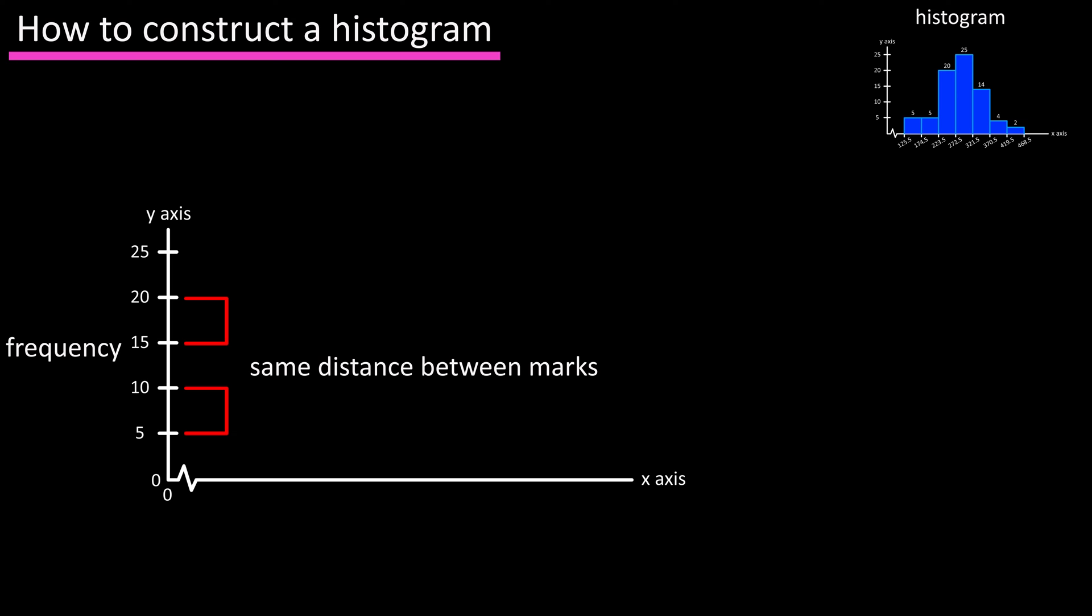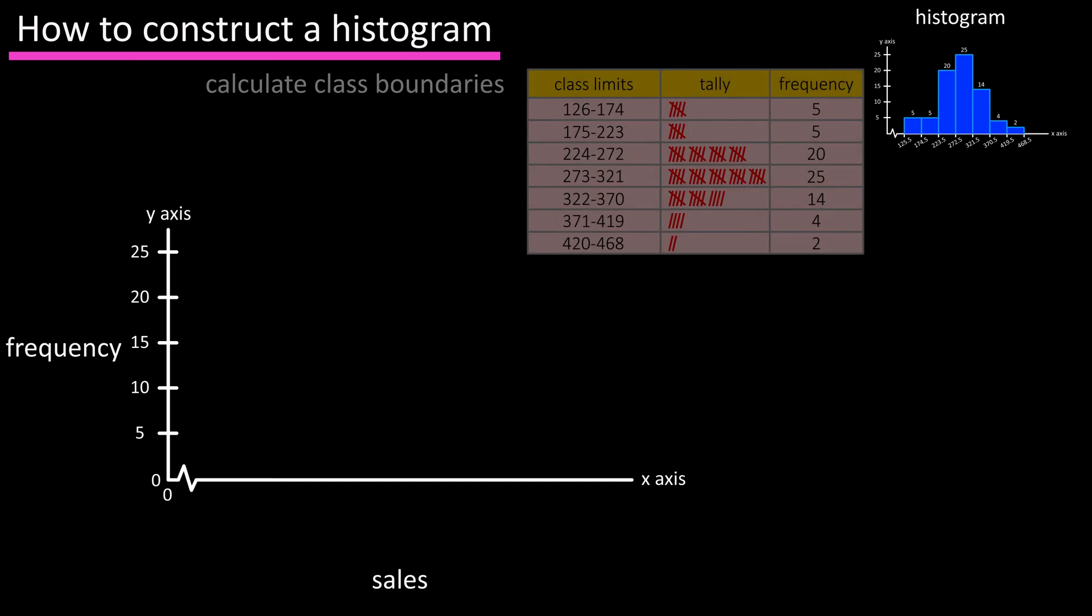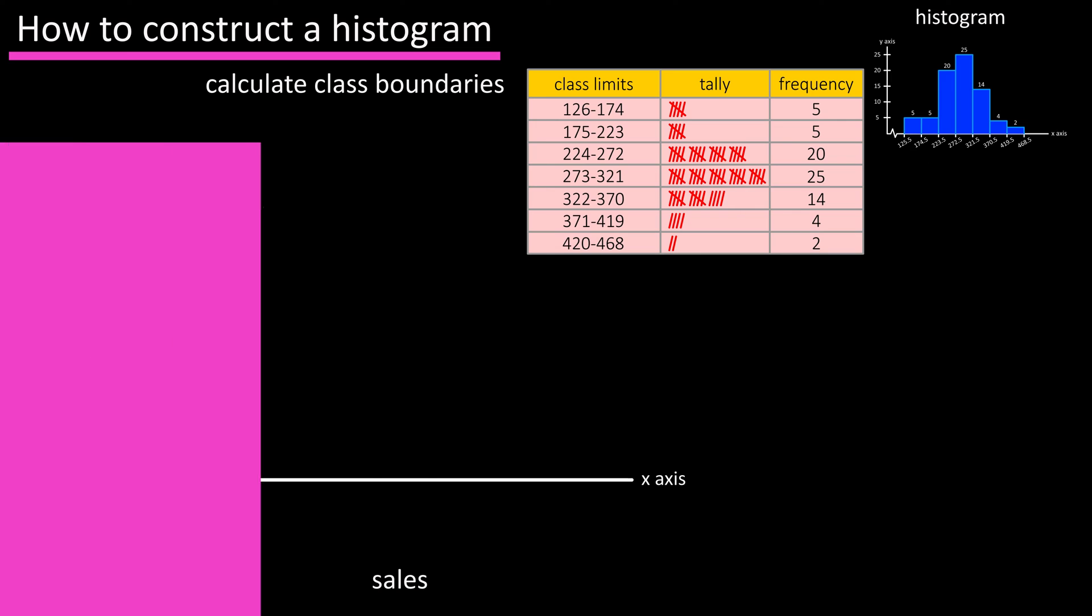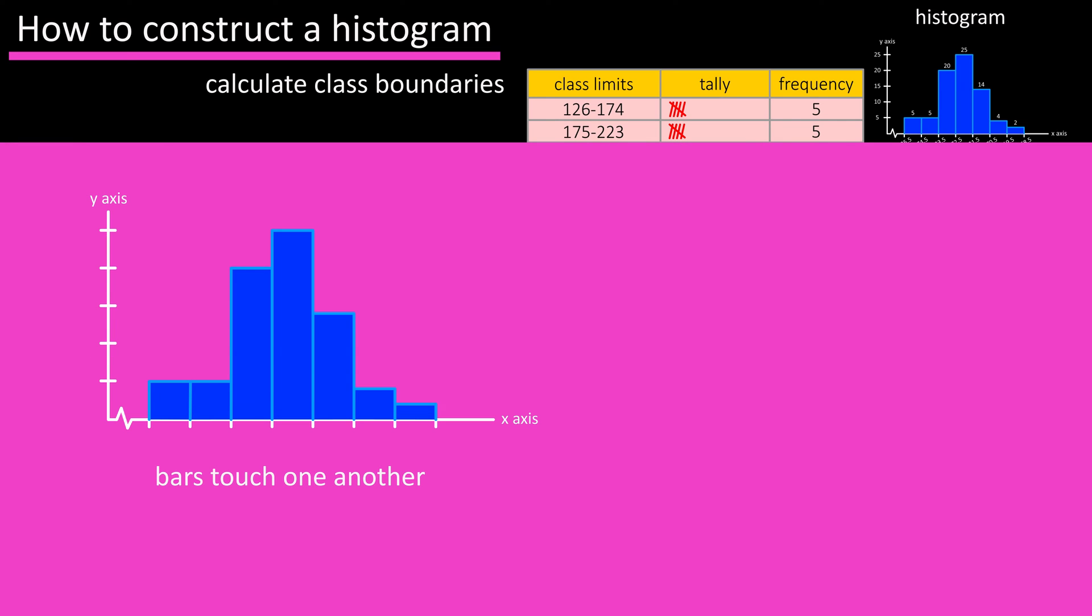The x-axis is going to represent whatever the data is. So let's say this data represents sales, but before we label the x-axis we need to calculate class boundaries for each of the classes. Because consecutive bars in a histogram touch one another, we can't use the class limits, because technically there would be a gap between the bars.